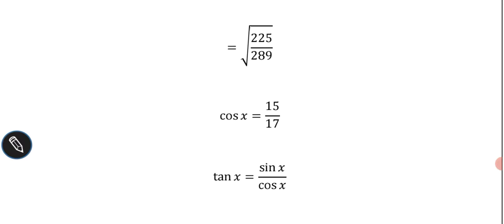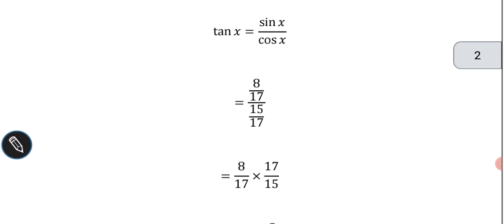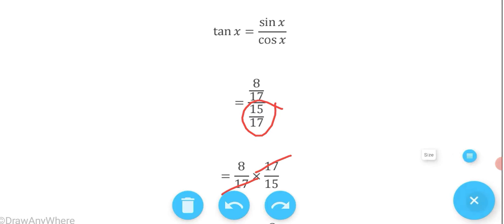Now we can write tan x = sin x / cos x. Plugging in the values: (8/17) ÷ (15/17) = (8/17) × (17/15). The 17s cancel, so tan x = 8/15.